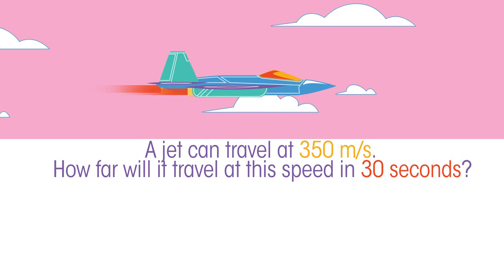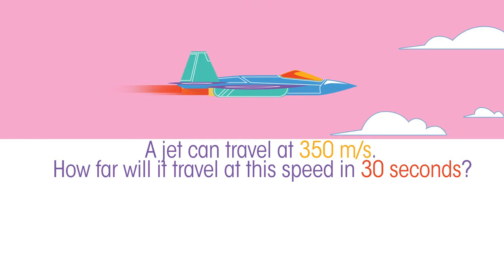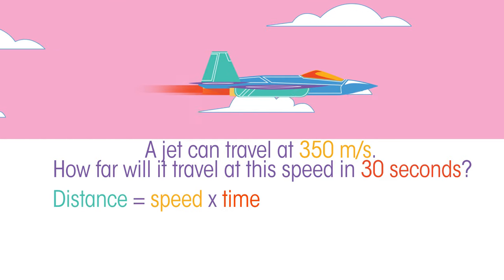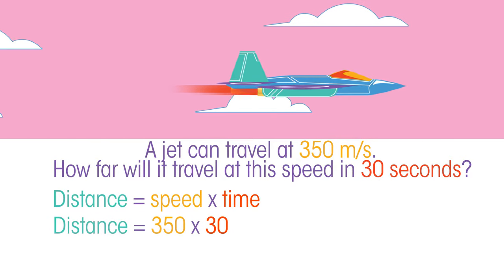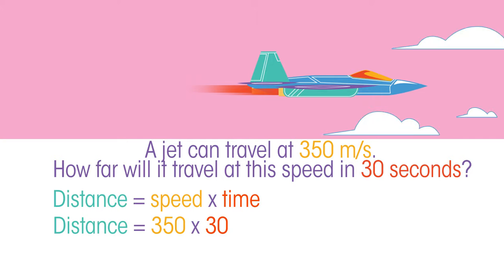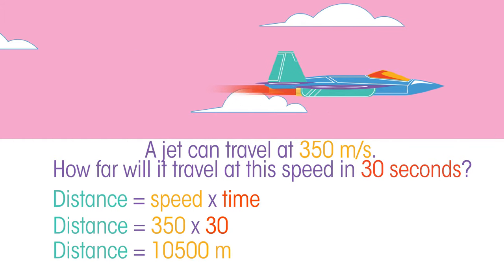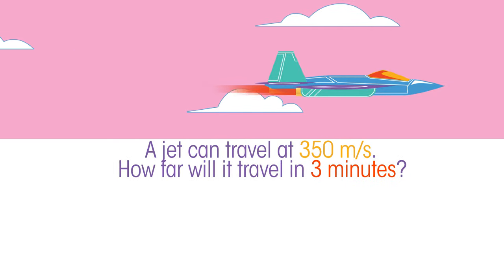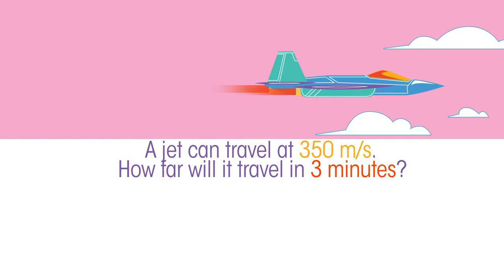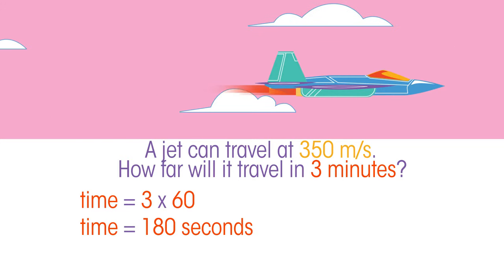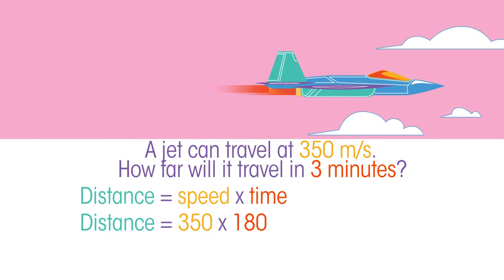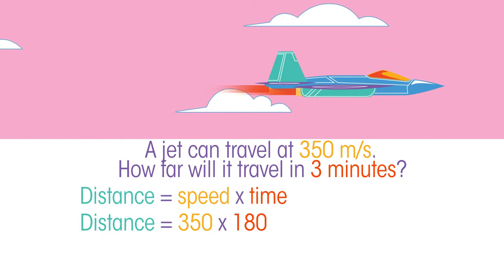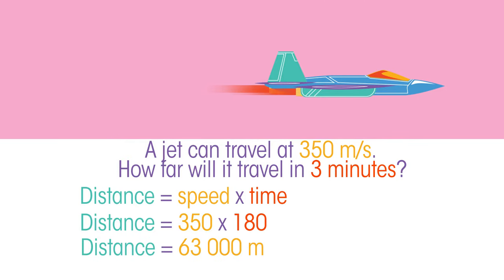Pause and have a think. Well, it travels 350 meters in one second, so in 30 seconds it will travel 30 times 350, which equals 10,500 meters. So how far will it travel in three minutes? Pause and have a think. Well, three minutes is three times sixty, or 180 seconds, so the distance it will travel is 180 times 350, which equals 63,000 meters, or 63 kilometers.